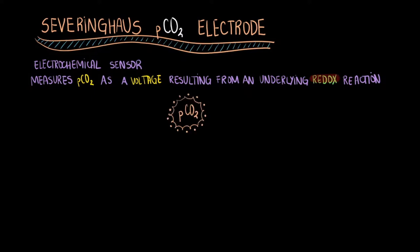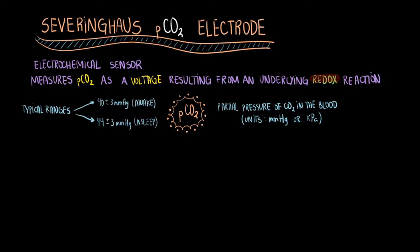PCO2 is defined as a partial pressure of carbon dioxide in the blood. It is normally measured using units of millimeters of mercury. Its typical ranges in the blood include 40 millimeters of mercury when awake and 44 millimeters of mercury when asleep. PCO2 is often used as a marker of alveolar ventilation in the lungs. An altered value of PCO2 could indicate insufficient alveolar ventilation.